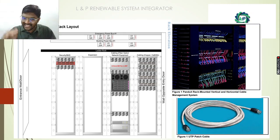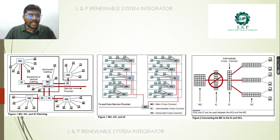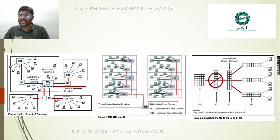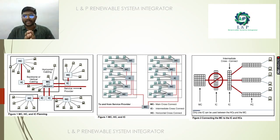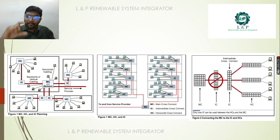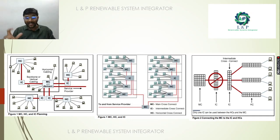If you look at these provisions, there will be horizontal cable management. You will see the exact picture of what we have discussed. The main cross connect is the main cross connect. Intermediate cross connect, horizontal cross connect. At that point, our service provider has a large network. They connect the first to the first. The main cross connect is on the field side, the work area, and the equipment.